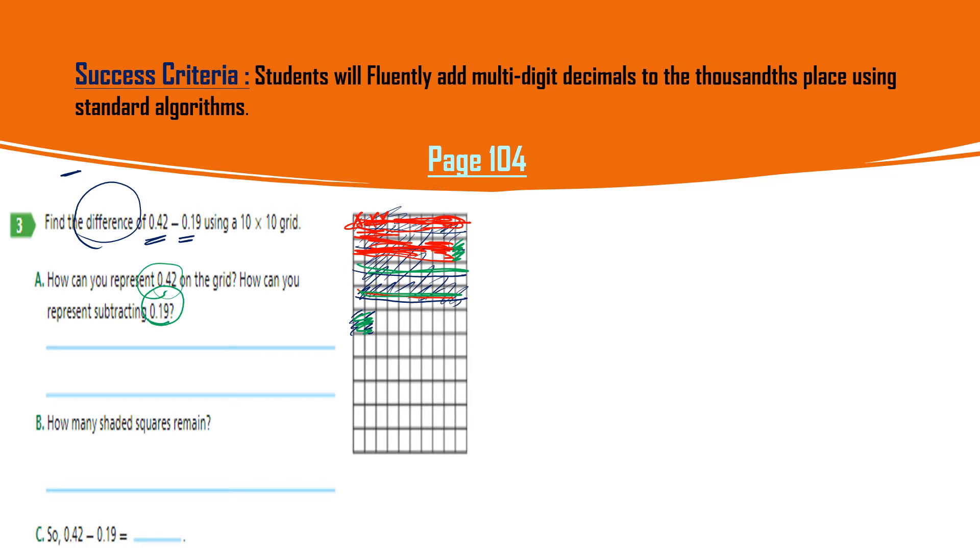How can you represent 0.42 on the grid? How can you represent subtracting 0.19 on the grid? So you will write that we will shade 42 small squares on the grid, and then we will cancel 19 squares from the shaded one. How many shaded squares left? Yes, 0.23 - it means 23 squares, 23 shaded squares remained.